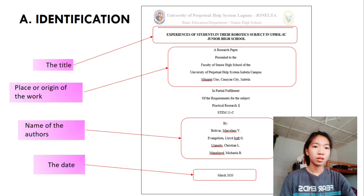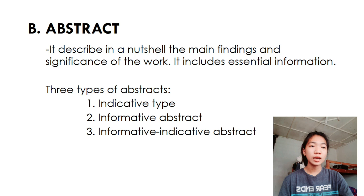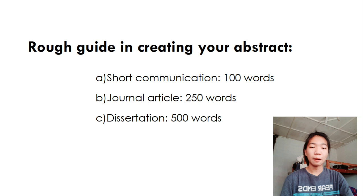For identification, you can see there the title, place, or origin of the work, name of the authors, and the date. For the abstract, it describes in a nutshell the main findings and significance of the work. It includes essential formation. Here are three types of abstract: indicative type, informative abstract, and informative indicative abstract. Here are the rough guiding eight in your abstract. For short communication, it contains 100 words. For journal article, it contains 250 words. And for dissertation, it contains 500 words.